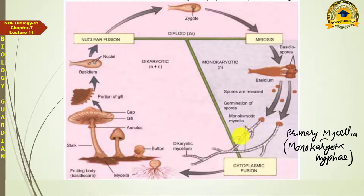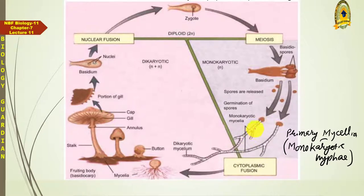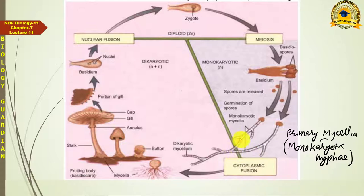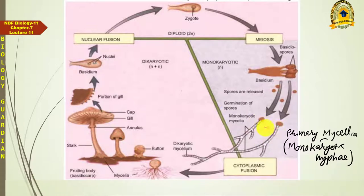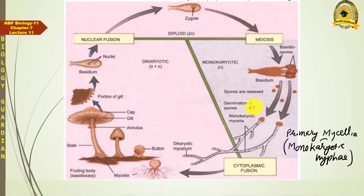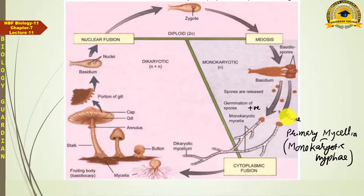These monokaryotic hyphae-containing primary mycelia keep growing, further branches keep originating, and ultimately at some stage the hyphae of two primary mycelia fuse together. For sexual reproduction in fungi, it is necessary that two genetically different but compatible types perform mating. One is called positive strain and one negative strain, as there is no clear-cut male/female sex difference.